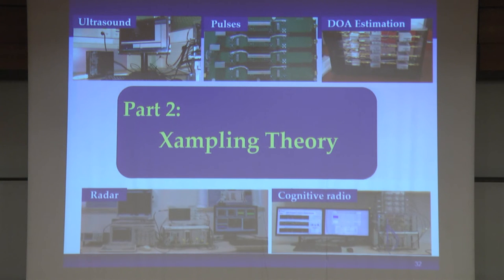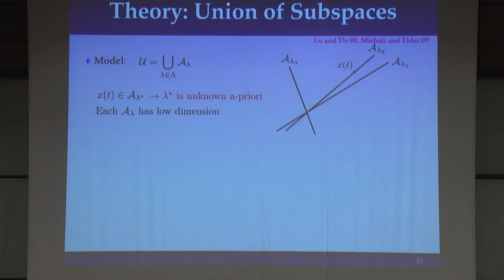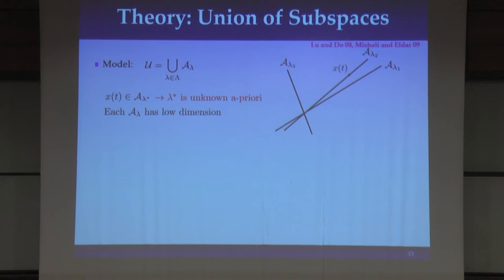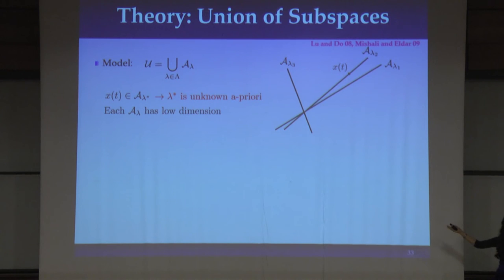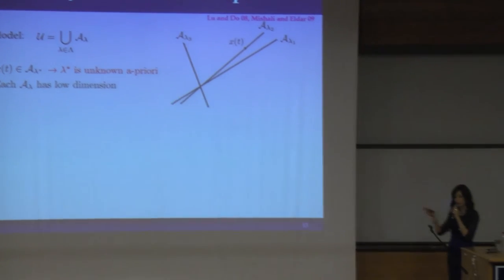There are many examples where structure is prevalent in signals. The question is how do we exploit it? We're going to introduce a sampling theory that is actually very simple. The first part is a mathematical model — a very simple model that is quite powerful: the union of subspaces model. All this is saying is that our signal lies in some low-dimensional subspace, but the subspace is chosen out of possibly infinitely many choices. We have a mixed estimation-detection problem: we must detect which is the correct subspace and then recover the signal within it.